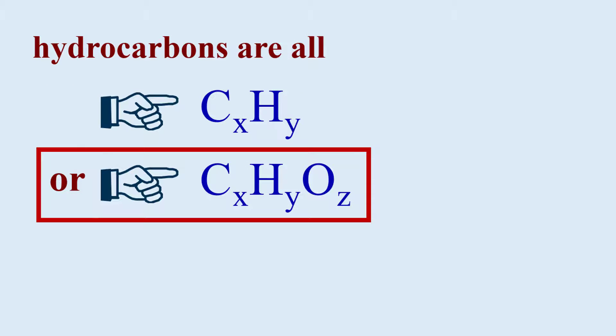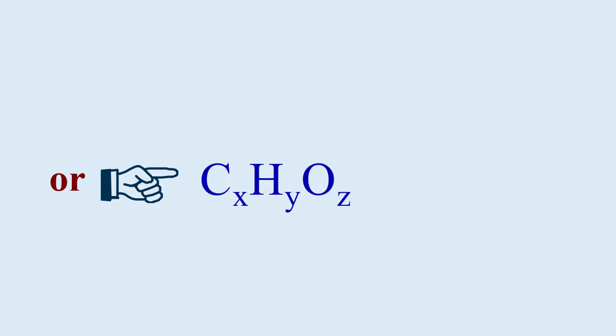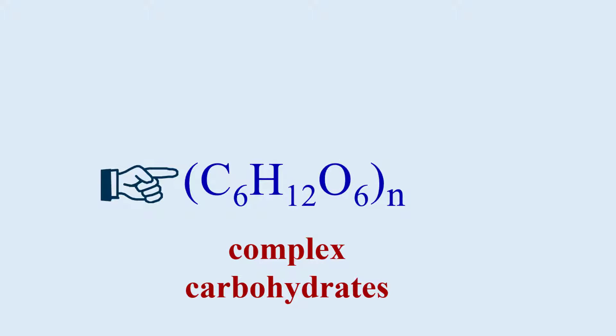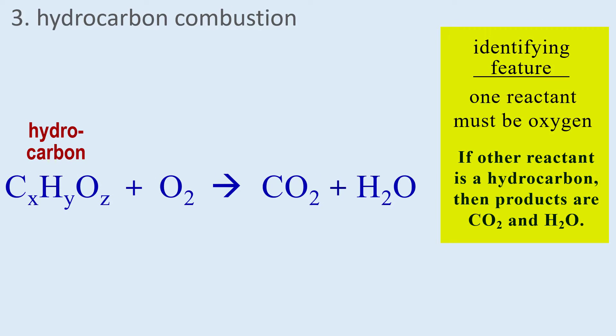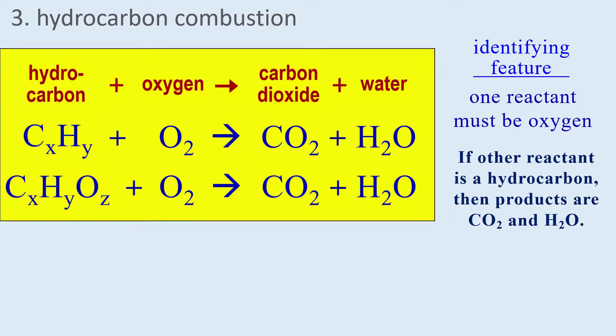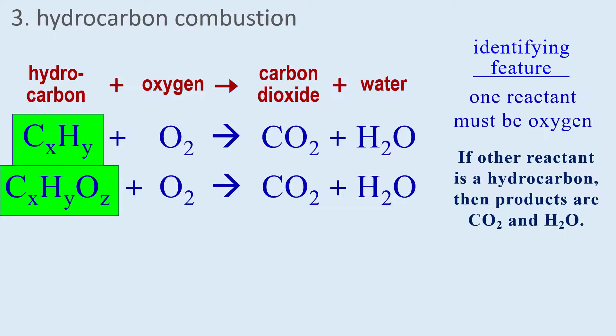That second type of hydrocarbon you need to be able to identify is just CXHY that has been oxidized to some degree, in other words has oxygen in the formula, so that its general formula is CXHYOZ such as formaldehyde CH2O or ethyl alcohol, glycerin, glucose, complex carbohydrates, and thousands of others. They are all hydrocarbons that will react with oxygen to produce carbon dioxide and water. So you need to be able to identify a hydrocarbon as having in general the formula CXHY or CXHYOZ.